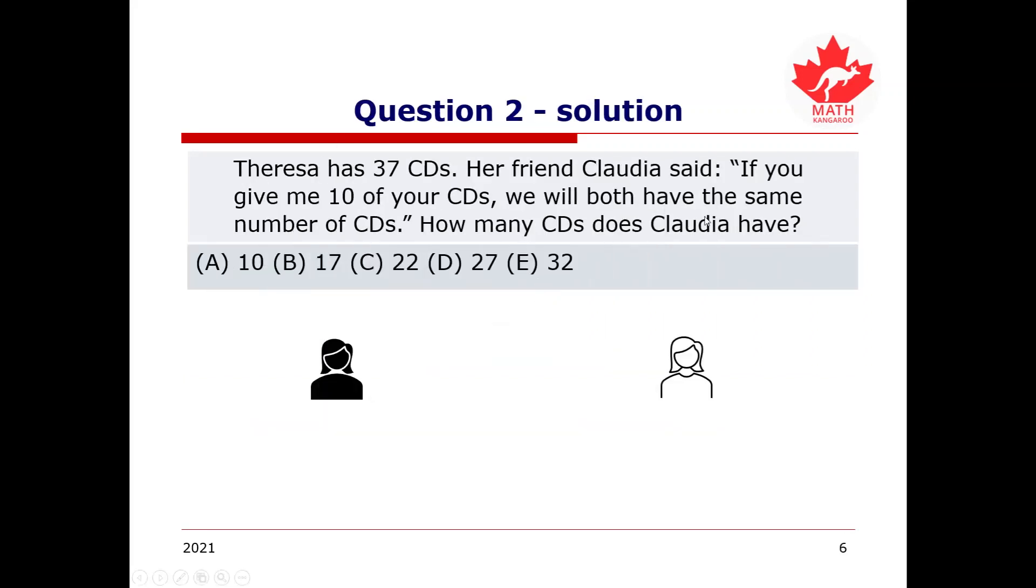So, for the first part, what is the question asking us? The question is, how many CDs does Claudia have? So, the question says, if Claudia gets sent 10 CDs from Teresa, they will both have the same number of CDs. So, we can simply go 37 minus 10, because Teresa initially has 37, and if she gives 10 away, she'll have 27 CDs. Therefore, we know that both Teresa and Claudia will now have 27 CDs each.